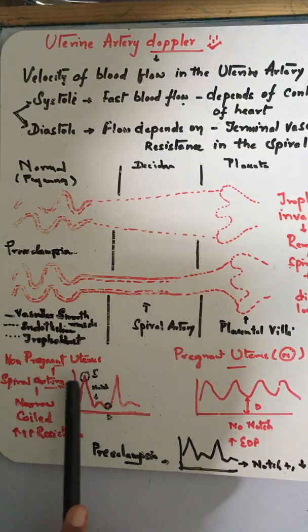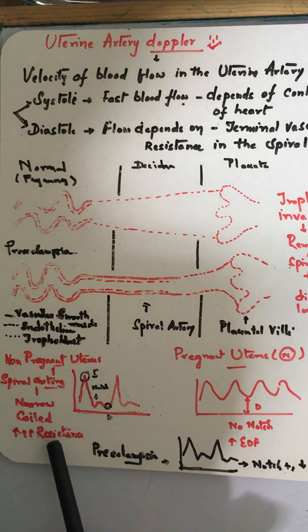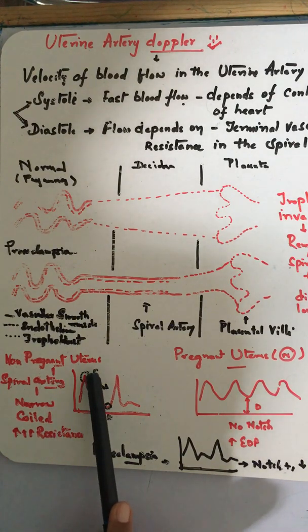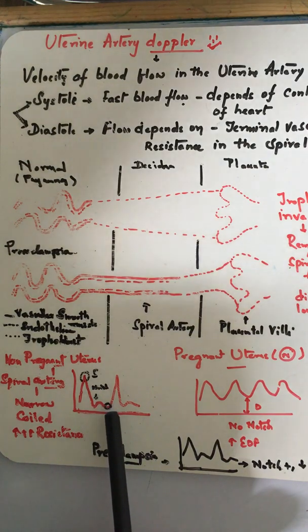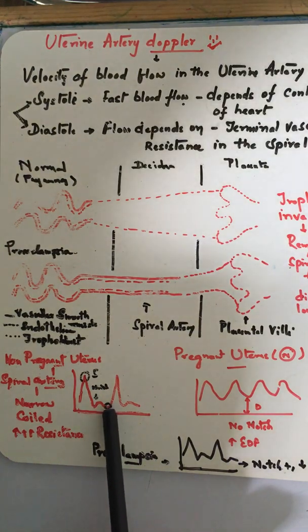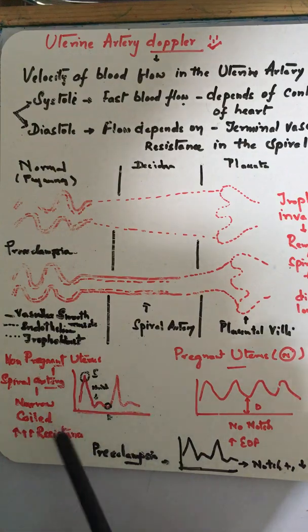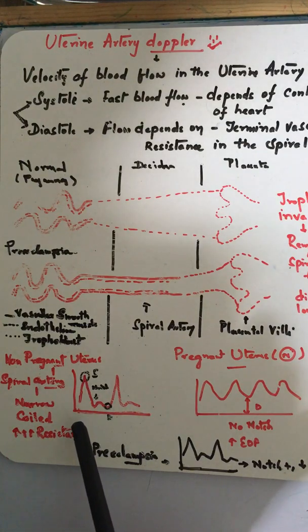In the non-pregnant uterus, the spiral arteries are narrow, coiled, with increased resistance. We have a systolic peak, an early diastolic notch, and end-diastolic flow. This is the waveform within the non-pregnant uterus spiral artery.